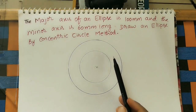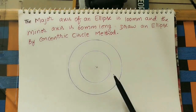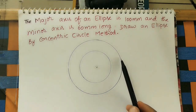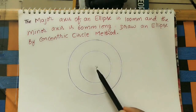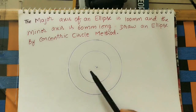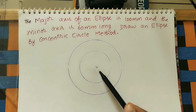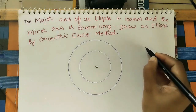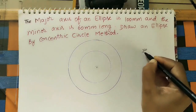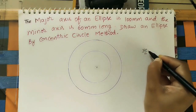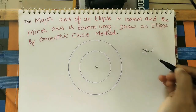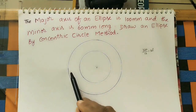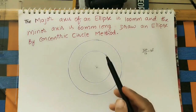After getting these two circles, divide the circle into 12 equal divisions. As we know, the angle at the center of any circle is 360 degrees. So we divide 360 degrees by 12, giving us 30 degrees — each part is 30 degrees.